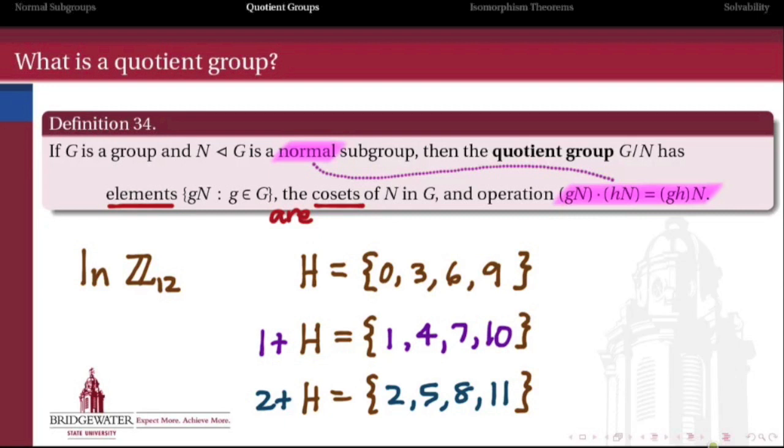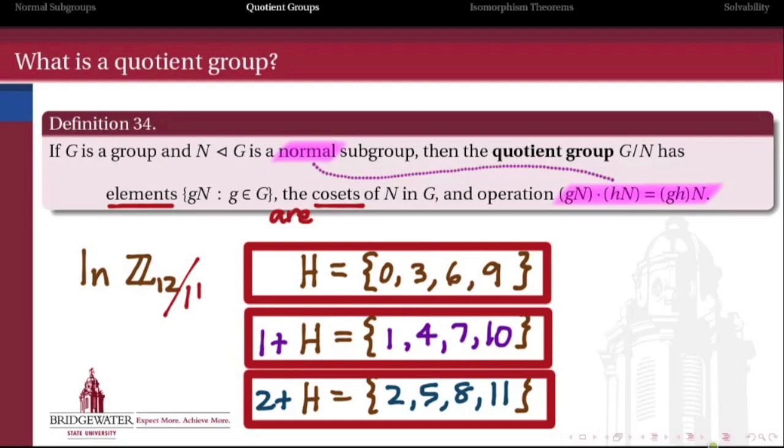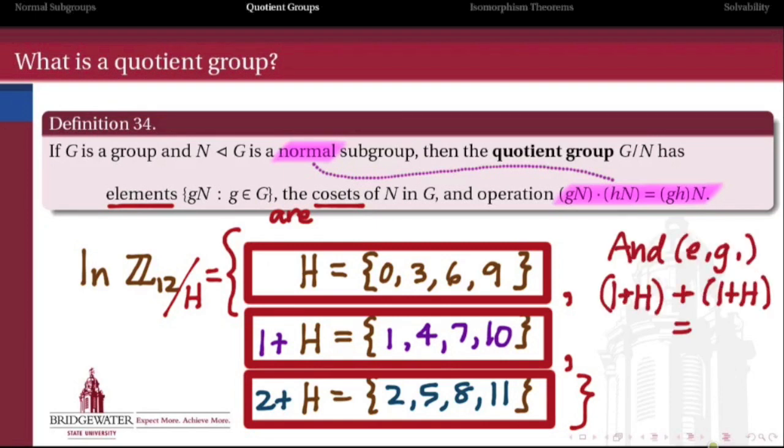So what does a quotient of Z mod 12 by H look like? Well, it takes each one of these cosets and treats it like it's its own element. So there are actually three elements in Z mod 12 quotiented out by H. The elements are H itself, 1+H, and 2+H, the three cosets.